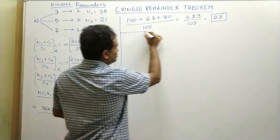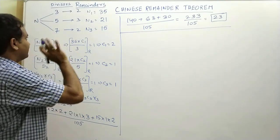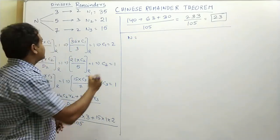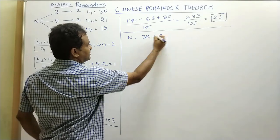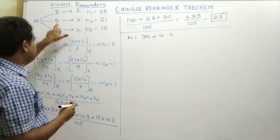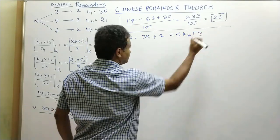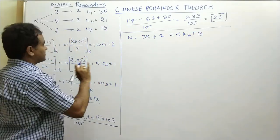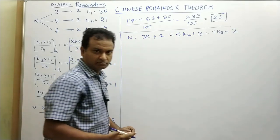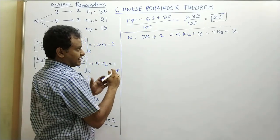I will now teach you another simple shortcut technique to solve questions like this without this confusion. When you divide n by 3, the remainder is 2, so you can write n = 3k1 + 2, where k1 is some quotient. Similarly, n = 5k2 + 3 and n = 7k3 + 2. Take any two equations and solve for integer values.